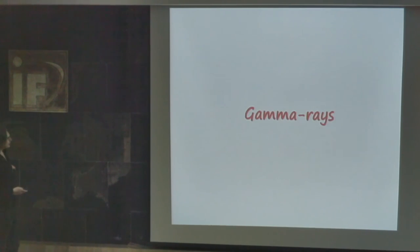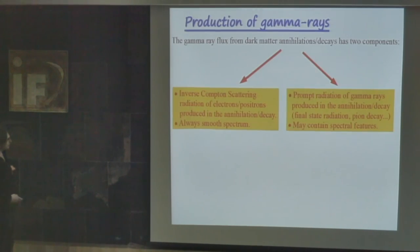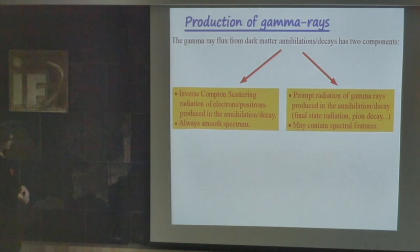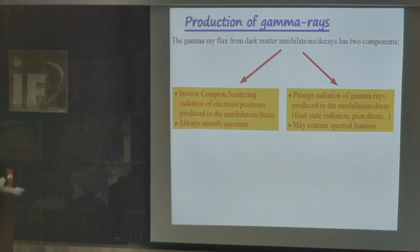Today I'm going to discuss different messengers — gamma rays. We'll follow the same program as yesterday: first production, then propagation, then detection. For the production, one can see that the gamma ray flux has two components.